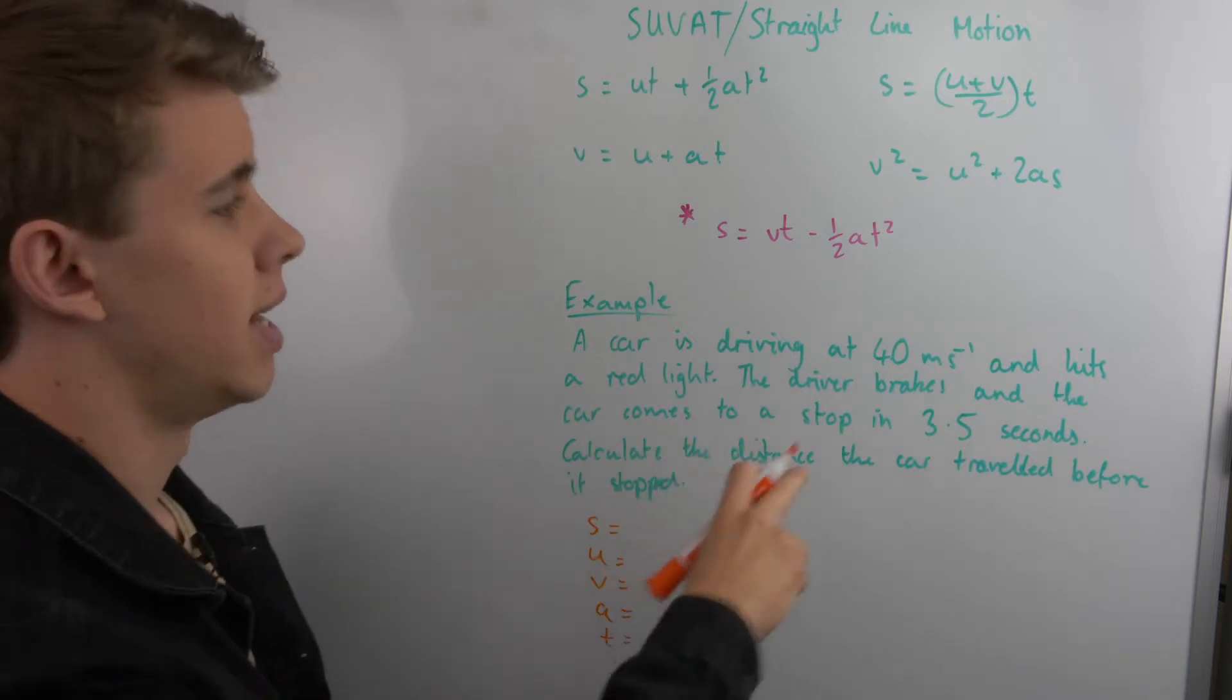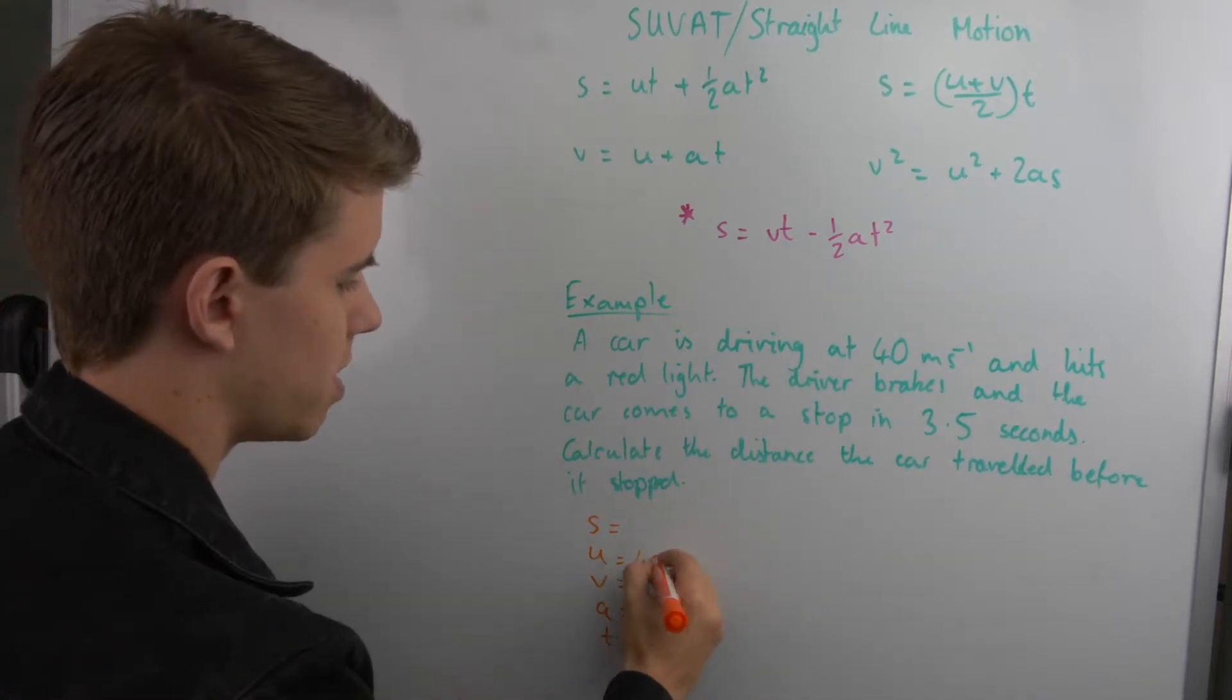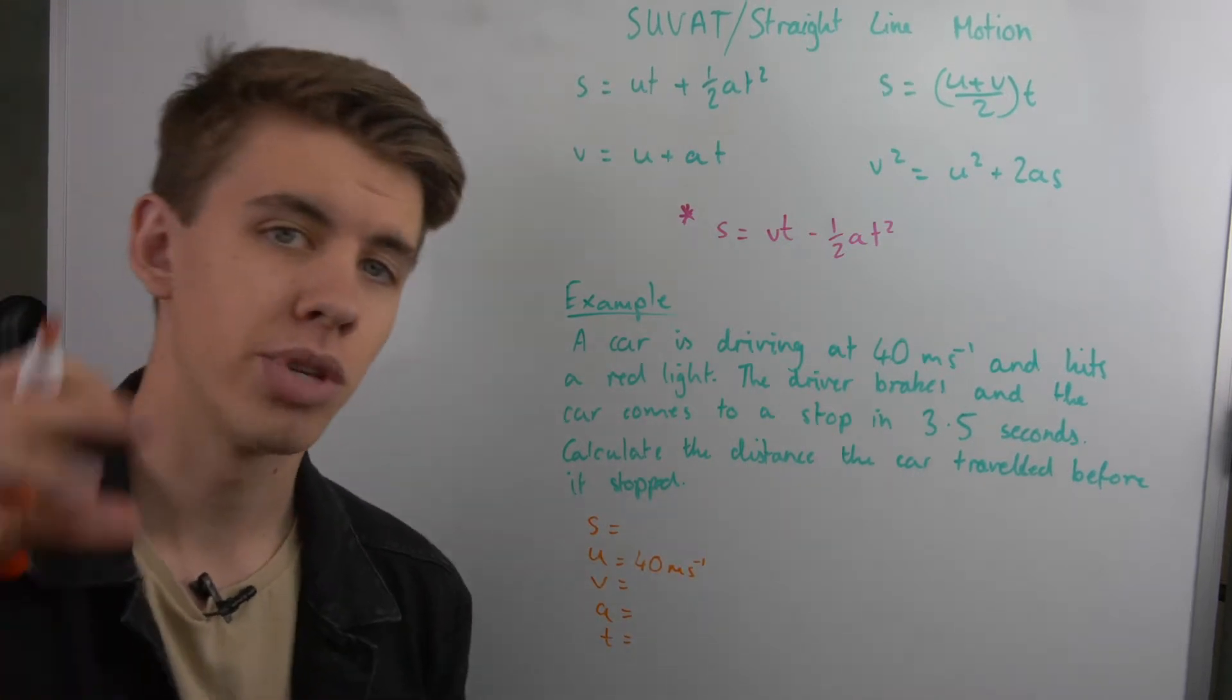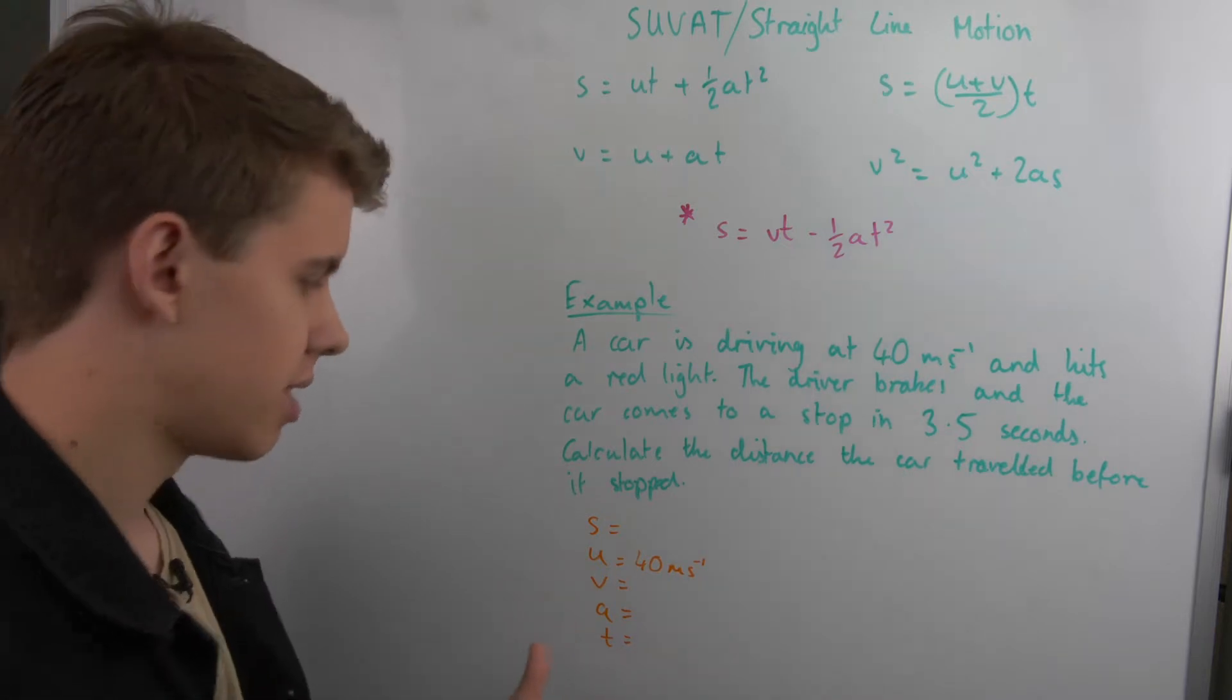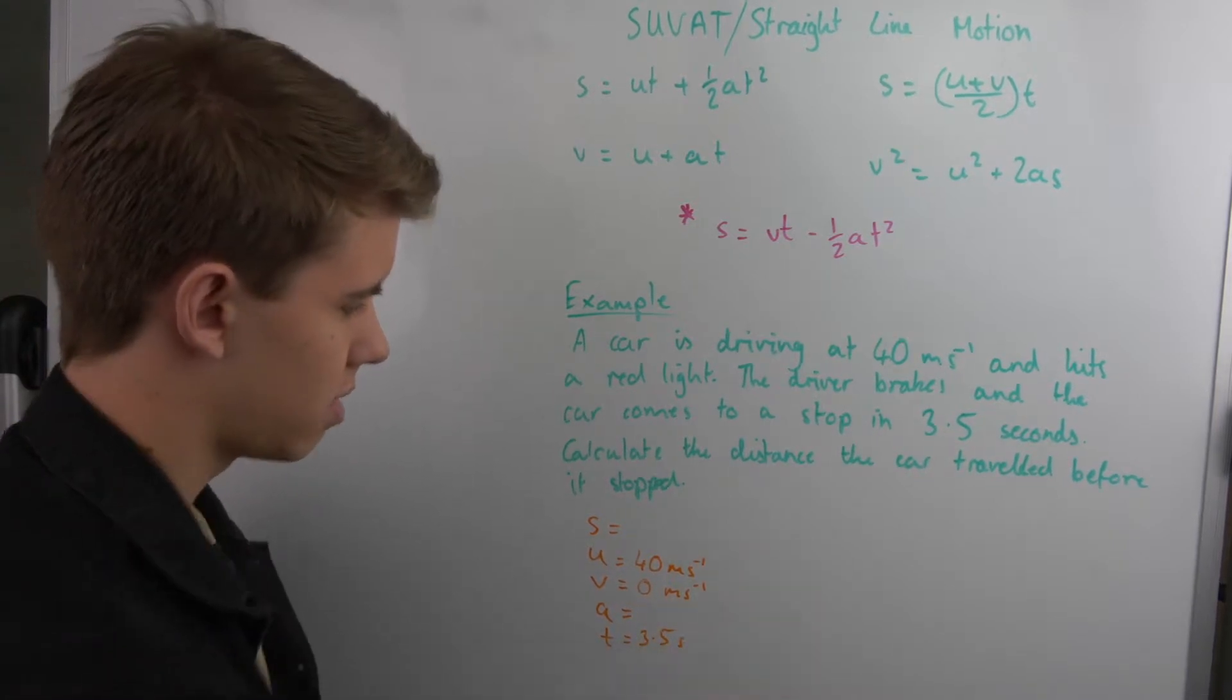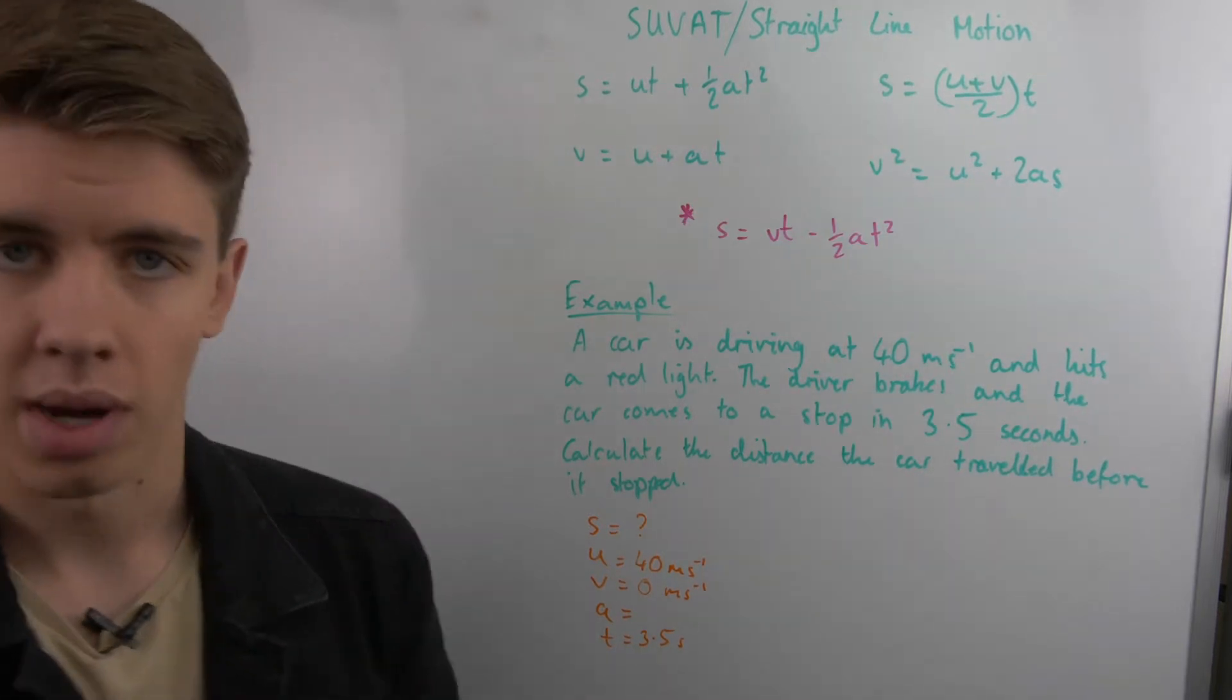So a car is driving at 40 meters per second. So your initial velocity is 40 meters per second, and it hits a red light, the driver breaks, and it comes to a stop. Now this isn't a value, but you can infer from the question that means the final velocity after this time is going to be zero meters per second. And then your time is 3.5 seconds, and your distance, or your displacement, is what you are working out.